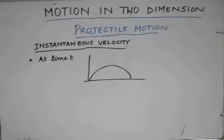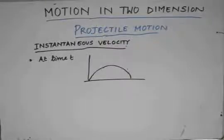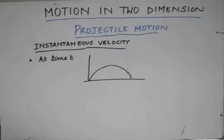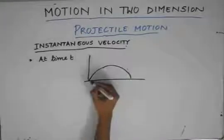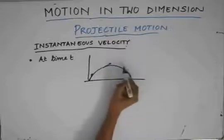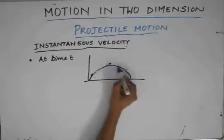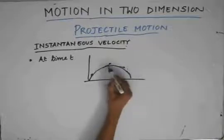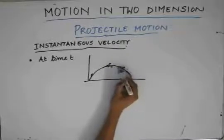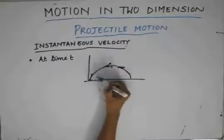In projectile motion, the horizontal velocity is constant and the vertical velocity changes with time because there is acceleration in the downward direction given by g. So at any instant of time the resultant velocity is different and it makes different angles with the horizontal because of the change in the vertical velocity. So the angle changes at each instant.